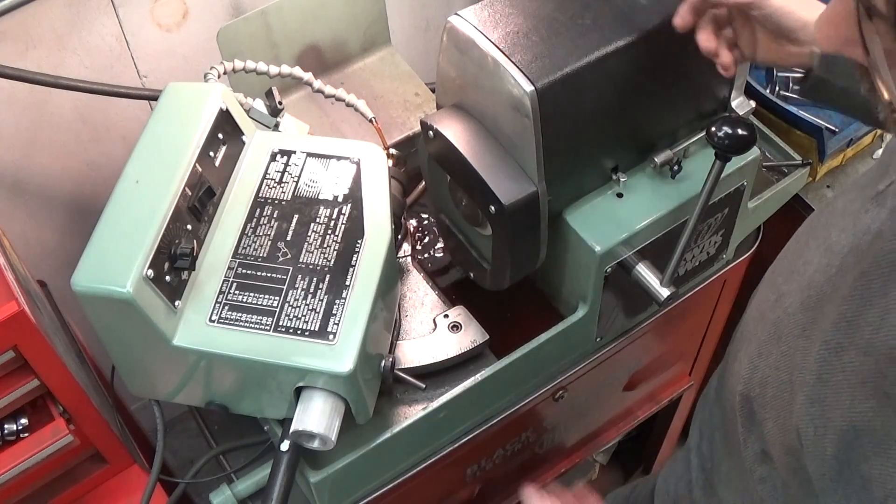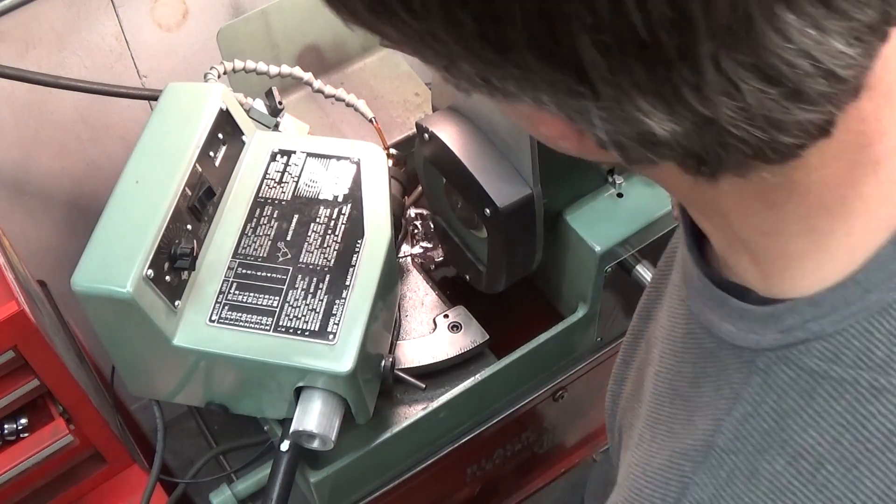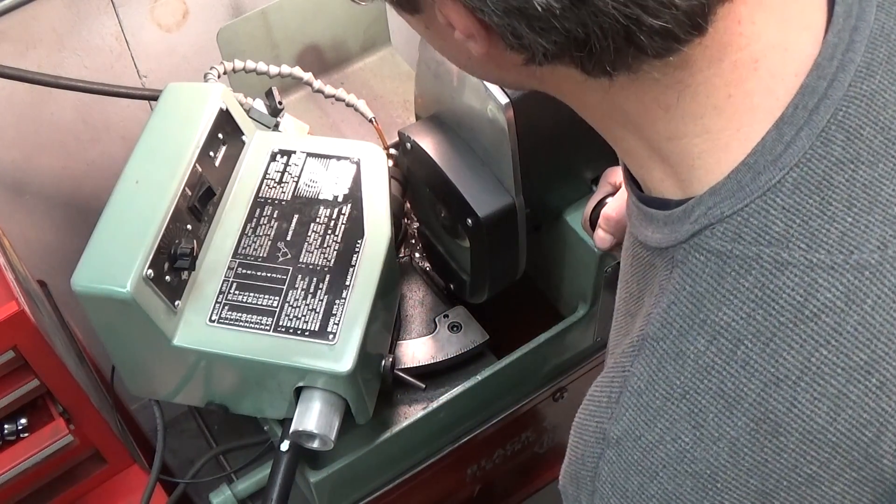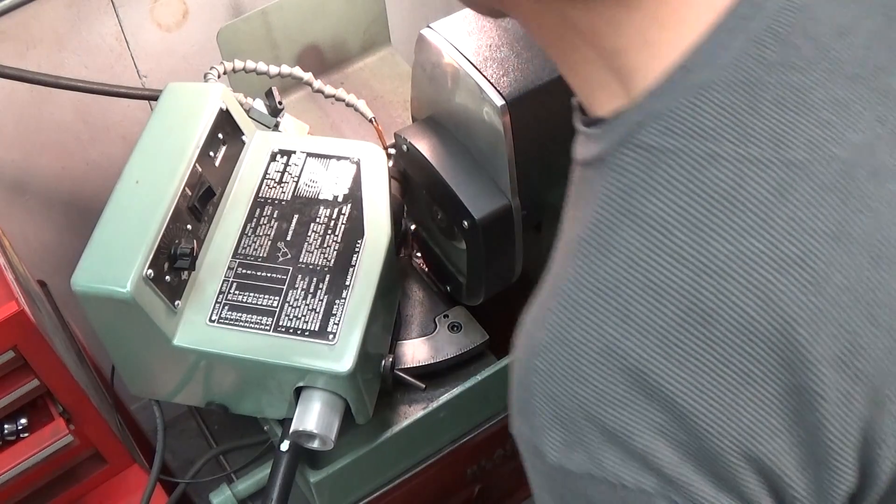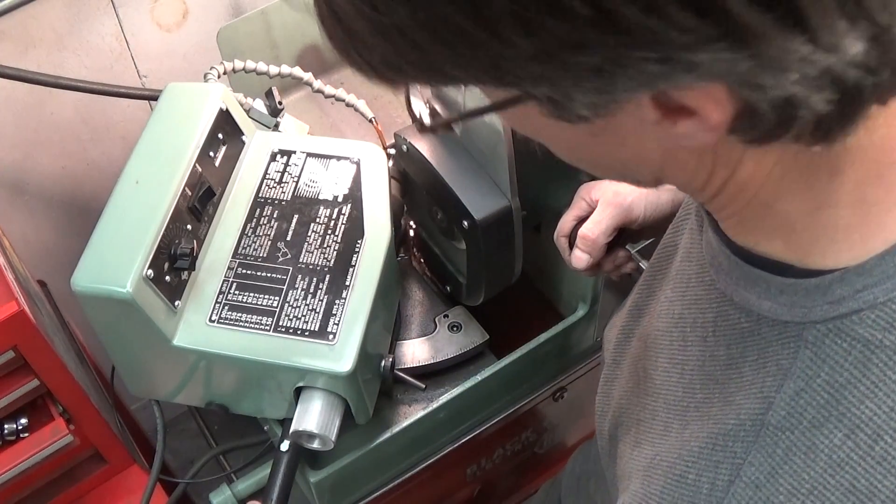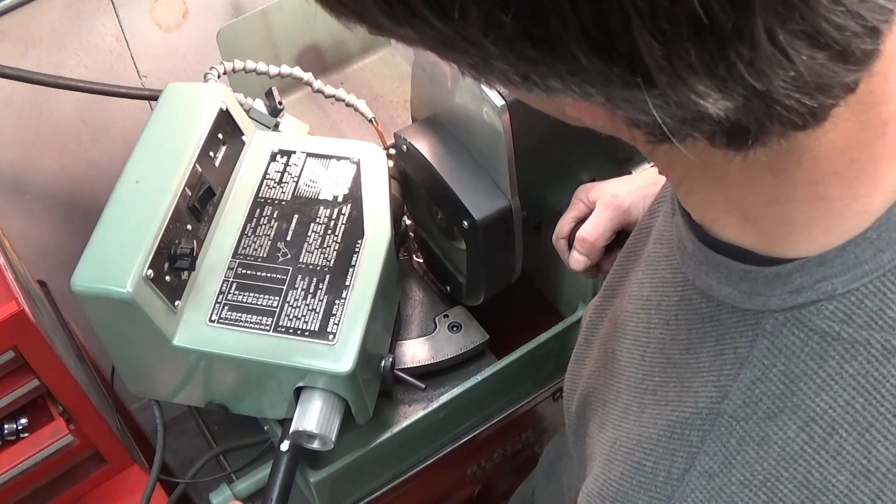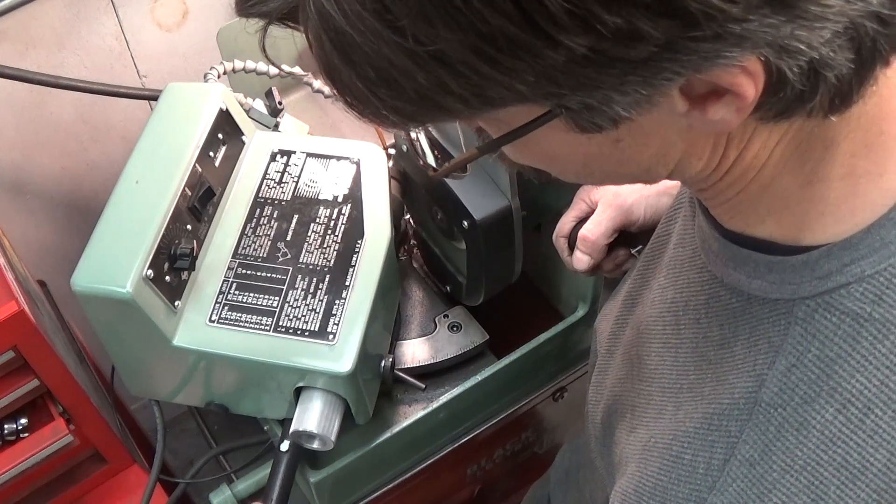It's an air chuck, the valve just pops in as a positive stop and I've set the depth of the grinder here already. But if you can hear the valve when it touches the stone, we can see how straight it was.